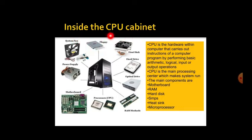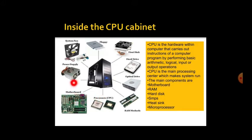Let us go inside the CPU cabinet. CPU stands for central processing unit, which processes input and gives output. Inside the CPU cabinet we have a system fan, floppy drive, heatsink, hard drive, optical drive, RAM module, microprocessor, motherboard, and power supply. CPU is a hardware component that carries out instructions of a computer program by performing arithmetic, logical, input, and output operations.